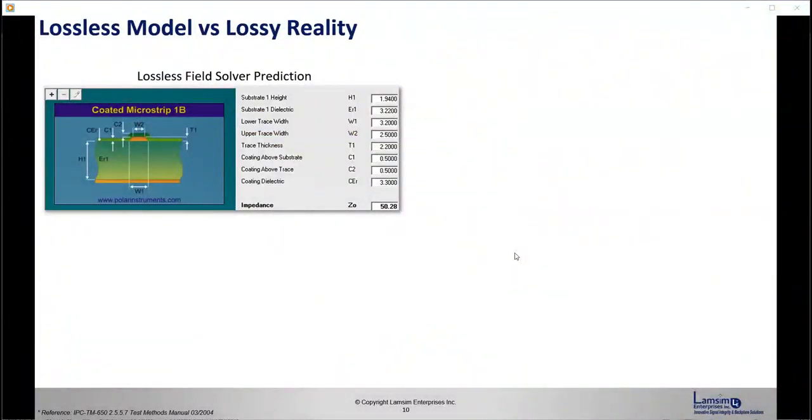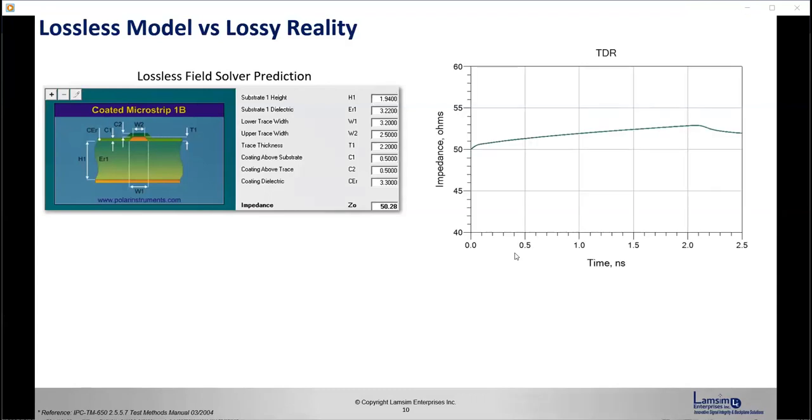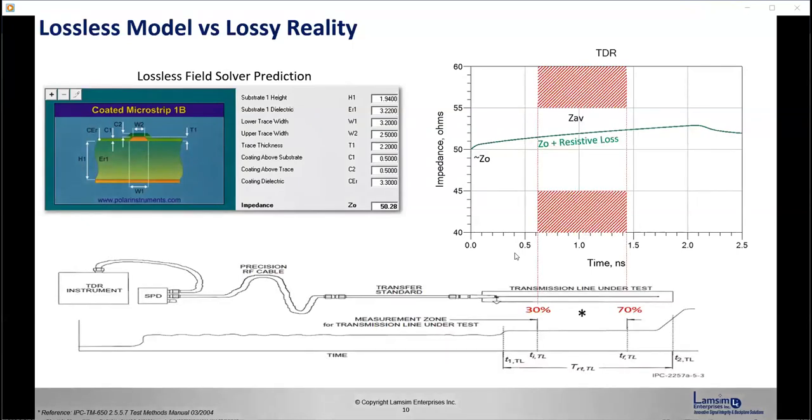Another issue is we do our stackup design. We generally use a 2D field solver, but a 2D field solver is a lossless calculation for impedance. In reality, when we do the TDR measurement, it's a lossy measurement for the length of the trace.